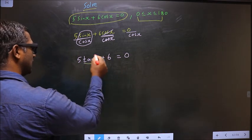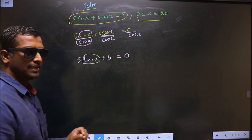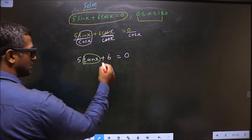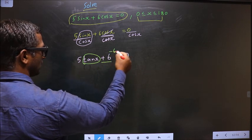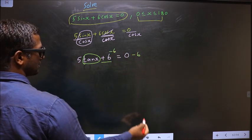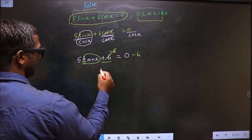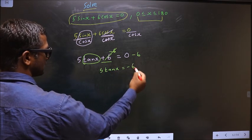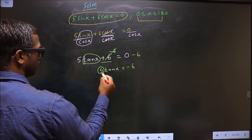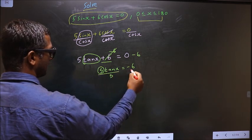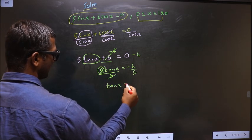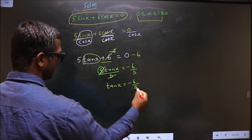So now here you have tan, so you should make tan the subject. For that first you should remove plus 6. So to remove plus 6 you subtract 6. We get 5 tan x equal to minus 6. Now we should remove 5. For that you divide by 5. So we get tan x equal to minus 6 by 5.